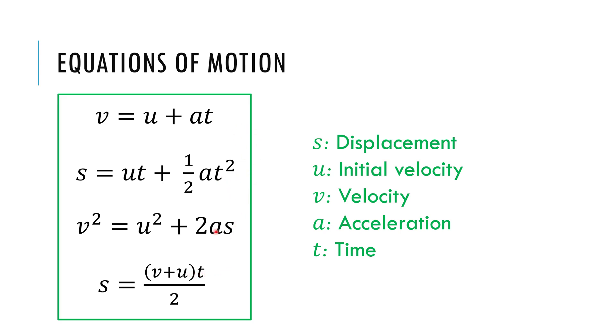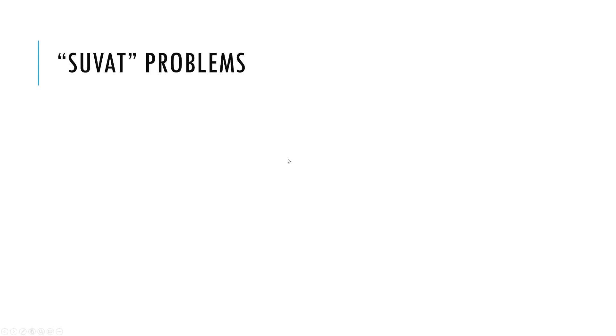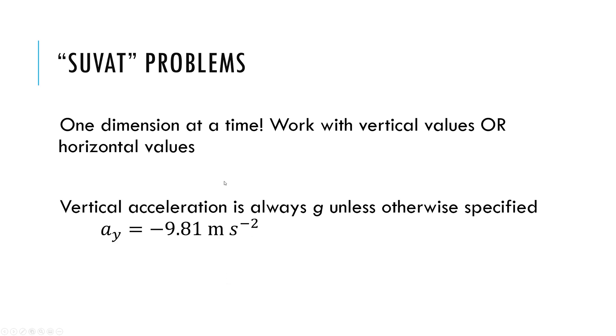So depending on what you have and what you need, you can choose the equation that's best for the situation you have. If you don't have the displacement and you don't care about finding the displacement, you would use this first equation. So you want to use that. You're going to list out the variables that you have and what you need to find. That'll help you decide what equation to use. When you're solving these problems, keep in mind, you are only working in one dimension at a time. So you got to look at vertical values only or horizontal values only. Some values that will always be the same. Vertical acceleration will always be g unless somebody tells you otherwise.